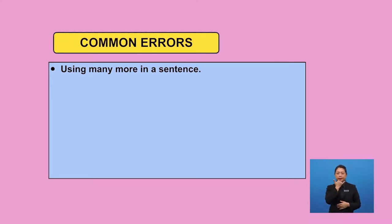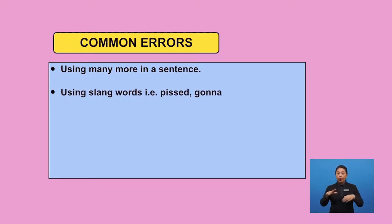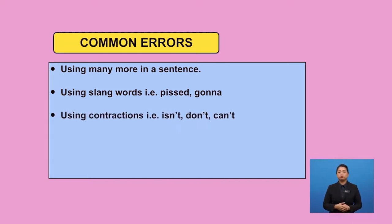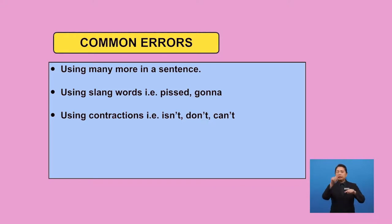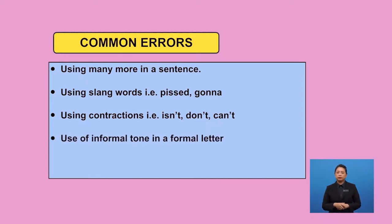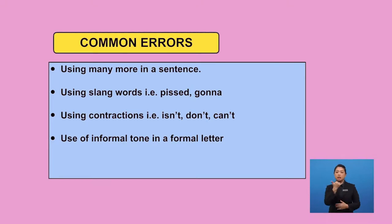Every time you write a formal letter, bear in mind the tone used should be formal too. Hence, slang words are not allowed. Avoid the use of contractions — write in full. An example of a contraction is 'isn't' — you should write it as 'is not.' Isn't is wrong; 'is not' is correct. Do you know that slang words like 'wanna,' 'gonna,' or the use of 'u' for 'you' are not accepted in a formal letter? They will be underlined as errors and this will greatly affect your language marks.